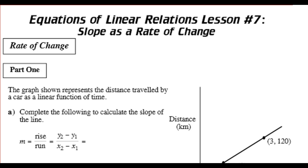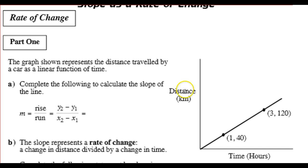The first example here, it says the graph represents a distance traveled by a car as a linear function of time. The distance here is on the y-axis, that's the dependent variable, and the independent variable, the x, is the time. Here's a car, it's moving along. It starts at a distance of 0 and a time of 0, and then 1 hour later, it is 40 kilometers from where it started. Then 3 hours later, it is 120 kilometers.